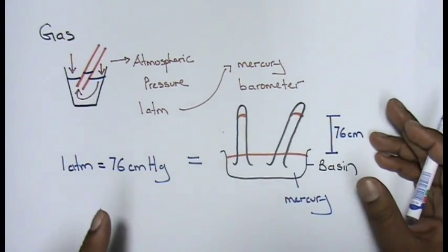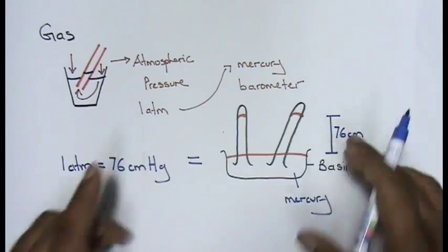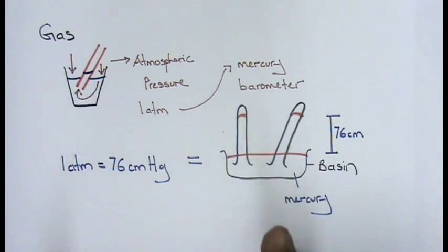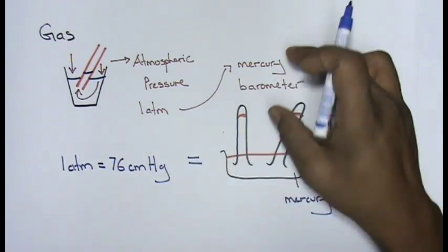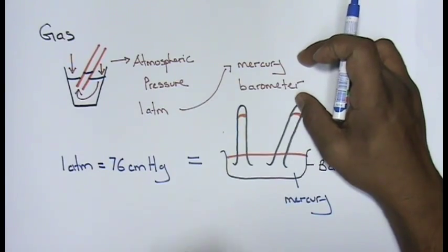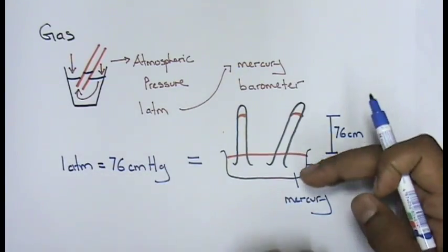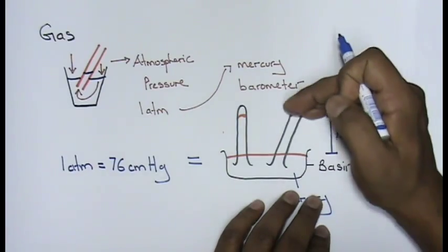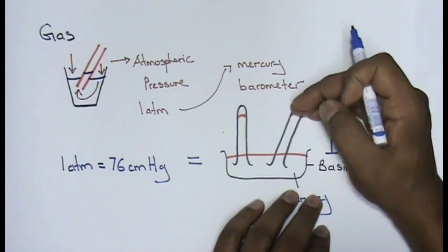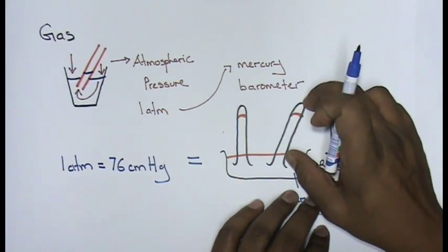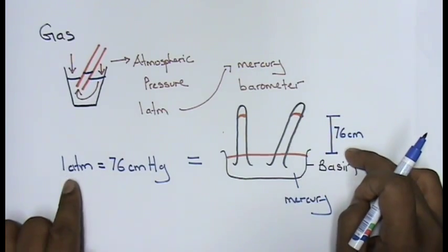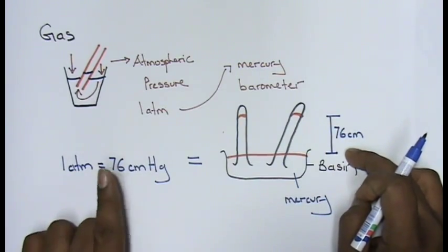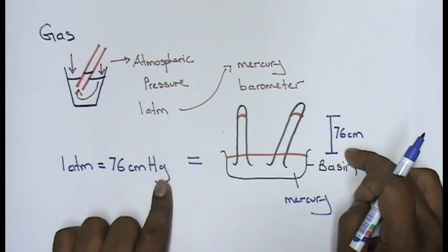And that atmospheric pressure, we have kept it as 1 atm. To prove this 1 atm, we want to put a value to this 1 atm. Using a mercury barometer, we have discovered the mercury rises up 76 centimeters in the capillary tube. And what we have done is, we kept an equation: 1 atm is 76 centimeters mercury.